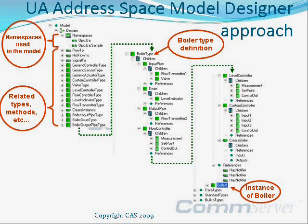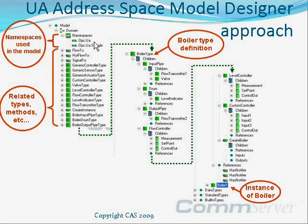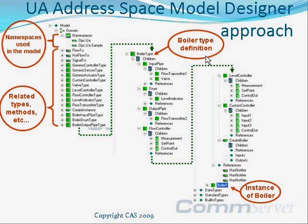Now we can port the design prepared in the previous step to the address space model designer. The model is presented on a tree and uses icons that represent the node classes mentioned earlier. At the beginning we have namespace declarations. The first namespace opc.ua refers to built-in OPC UA types and the second namespace opc.ua.sample is used to collect elements from our boiler sample design. After the namespaces, the tree contains types and method definitions like boiler drum type, flow-to reference type, and create method types. The main element is the boiler type definition, which consists of pipes, drum, and controllers. The last marked element is the boiler instance that is added to the model.